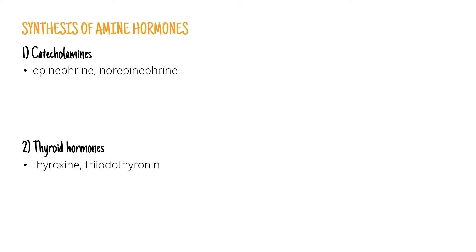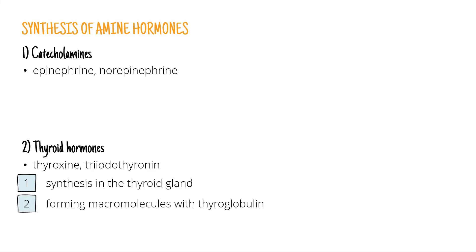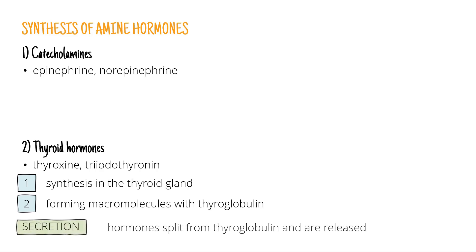Thyroid hormones are synthesized in the thyroid gland and they then form macromolecules with thyroglobulin. Together, they are stored in the gland until the hormones need to be secreted. They then split from thyroglobulin and are released.